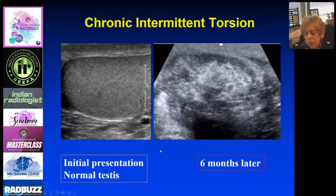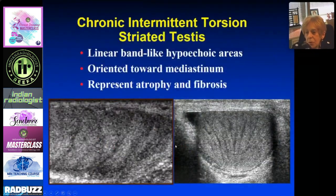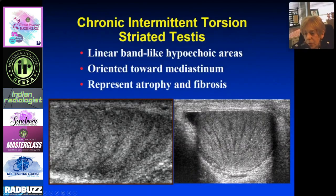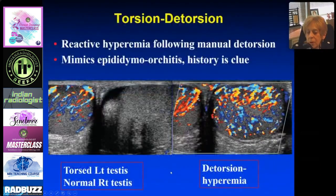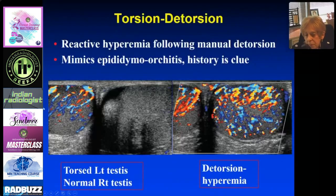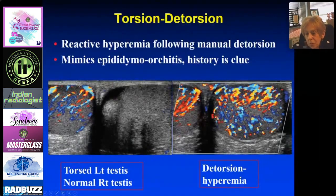Chronic intermittent torsion is difficult to diagnose because when it's intermittent, the testis can look completely normal. One patient looked normal, came back with intermittent pain, looked normal again, and six months later had an infarcted testis. Another finding of intermittent torsion is a striated testis — hypoechoic areas radiating toward the mediastinum, probably representing atrophy and fibrosis. After manual detorsion, you get reactive hyperemia — incredible flow that can look like epididymo-orchitis, but the history will give you the clue.